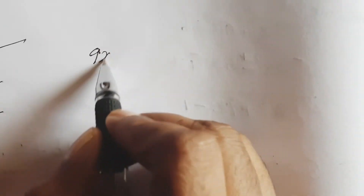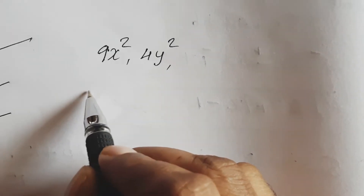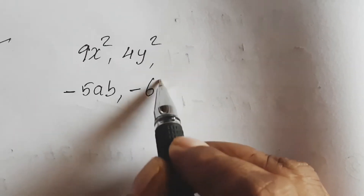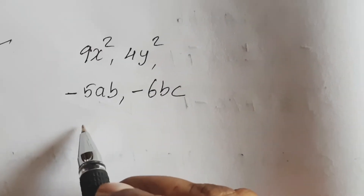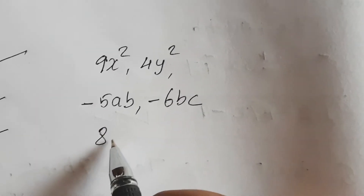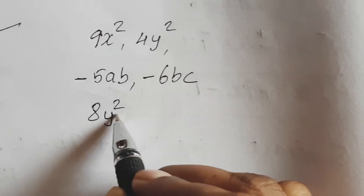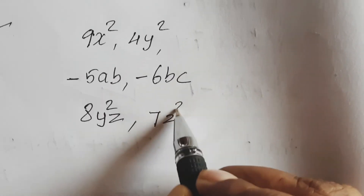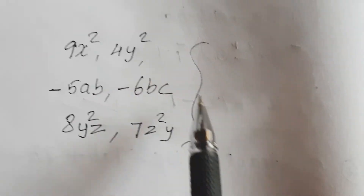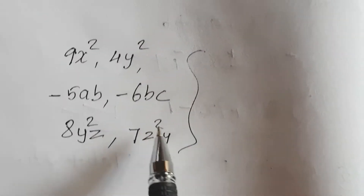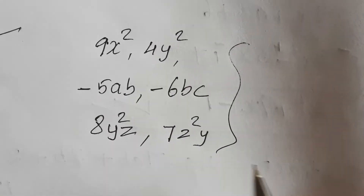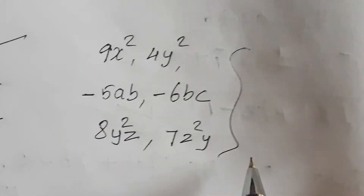Some examples of unlike terms: 9x square and 4y square; minus 5ab and minus 6bc; 8y square z and 7z square y. These are unlike terms. We cannot add or subtract unlike terms.